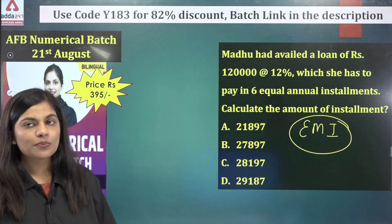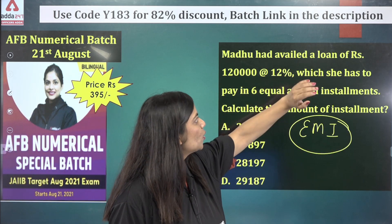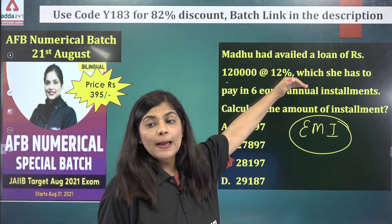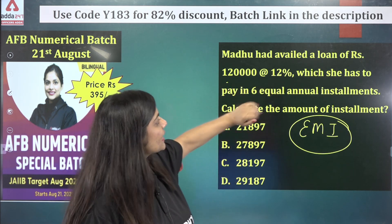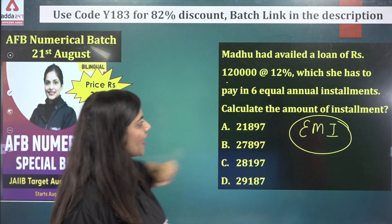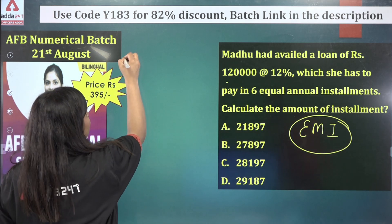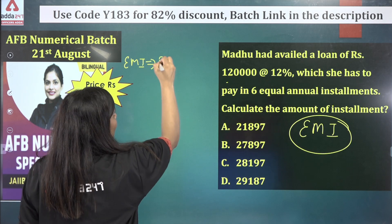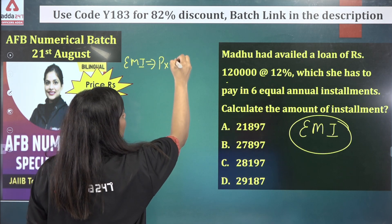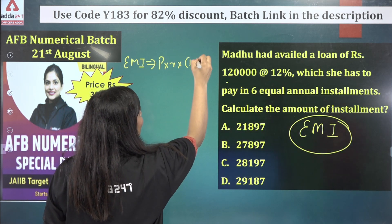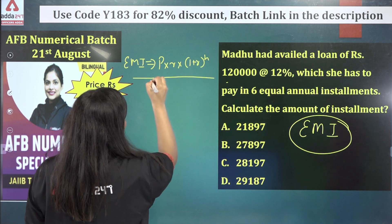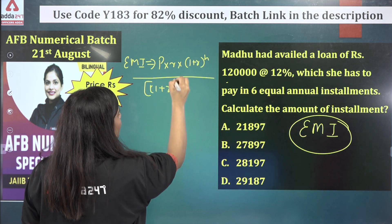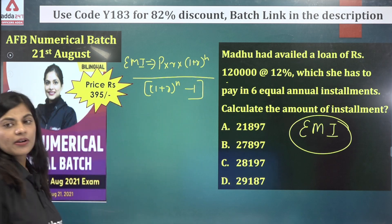So the EMI question says that Madhu needs a loan — a loan available for 1,20,000 at 12% interest with 6 equal installments, and you need to calculate the installment. First of all, we need the EMI formula, which is: Principal × Rate × (1 + r)^n divided by (1 + r)^n minus 1. This is your formula.